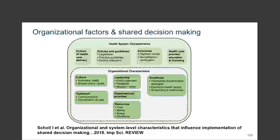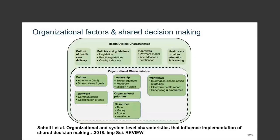Moving from screening into other parts of the continuum, this next example is not cancer-specific, but it is a nice review done by Isabelle Scholl, Sarah Cobran, and others, where they looked at 48 papers examining the organizational characteristics associated with shared decision-making. Across these 48 papers they identified six categories of organizational characteristics, including organizational leadership, culture, teamwork, resources, workflows, and others. They also took things a step higher to look at health system-level characteristics and found things like incentives, policies and guidelines, and healthcare provider education and licensing.